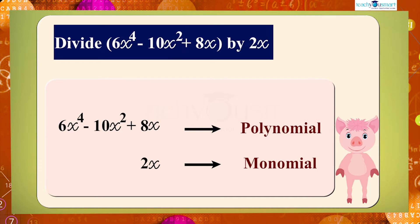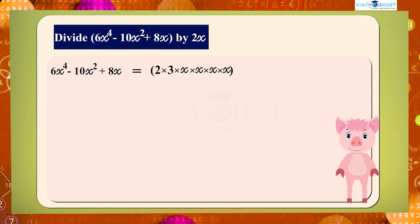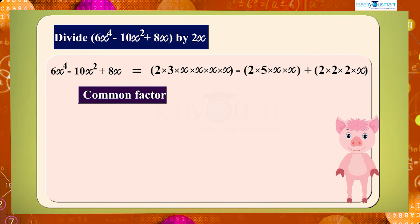We can express the polynomial 6x raised to 4 minus 10x squared plus 8x in irreducible factor form as: 2 × 3 × x × x × x × x minus 2 × 5 × x × x plus 2 × 2 × 2 × x. In all three terms there is a common factor 2 × x, that is 2x.